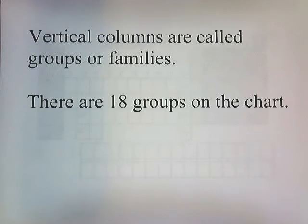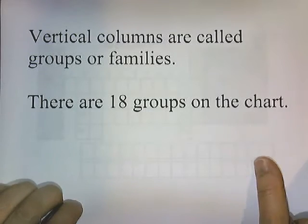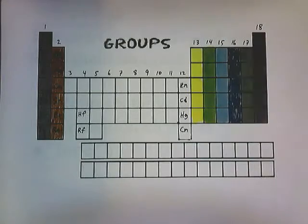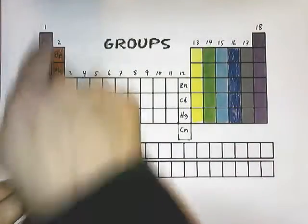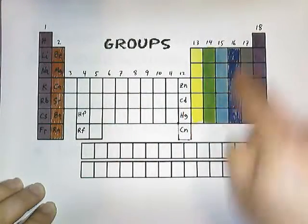Vertical columns are called groups or families, and there are 18 groups on the chart. So all these vertical columns, these are groups.